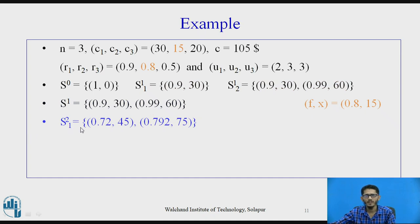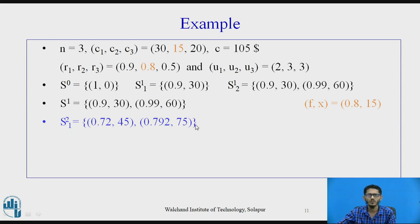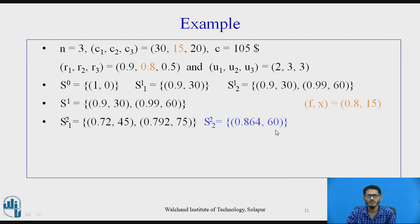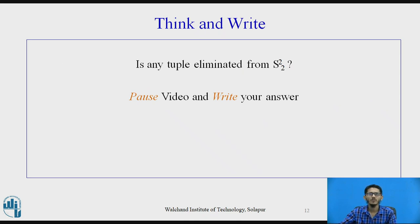For S2,1, considering one copy of device d2 with reliability 0.8 and cost 15: multiplying 0.8 by 0.9 gives 0.72, and adding 15 to 30 gives 45; multiplying 0.8 by 0.99 gives 0.792, and adding 15 to 60 gives 75. So S2,1 contains (0.72, 45) and (0.792, 75). For S2,2, considering two copies of device d2, we get the tuple (0.864, 60). Students are expected to think and write the answer: is any tuple eliminated from S2,2?